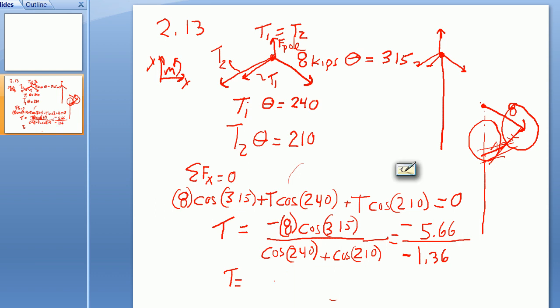Which means our tension is equal to 5.66 divided by 1.36 in the order of 4.16 kips. 4.16 kips or kilonewtons, whatever the case would be.